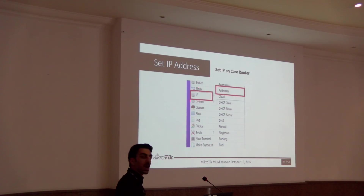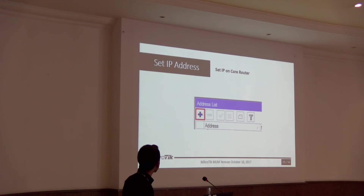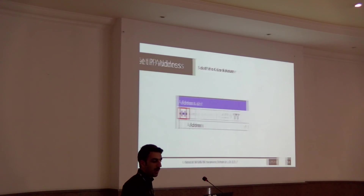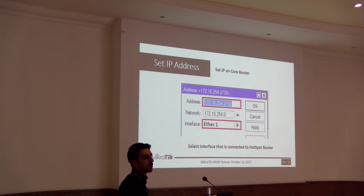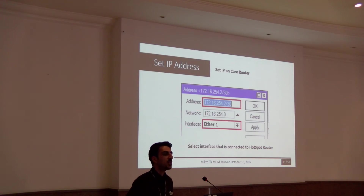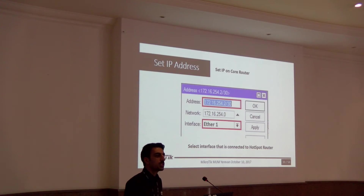Now we want to add an IP address on the core router. Go to the IP menu and click on Addresses, then click Add. The IP address should be in the same subnet as the Hotspot router — just a different IP. Select the interface that is connected to the Hotspot router, because we are creating connectivity between the Hotspot router and the core router.